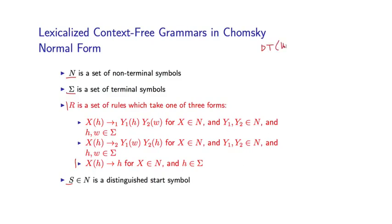For example, DT(the) goes to 'the' is one example of this rule, where X equals DT and H equals 'the'. These are the rules seen at the very leaves of the tree, where a part of speech with some lexical item simply rewrites as that lexical item.